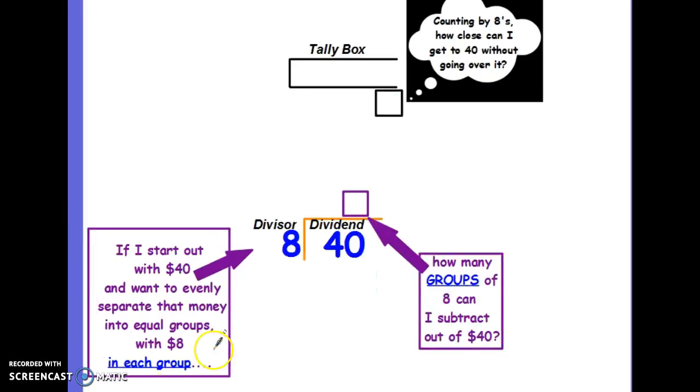Let's take a look at a couple more examples. Here's my tally box. And now I have a dividend, 40, divided by 8. So, counting by 8, how close can I get to 40 without going over? If I start out with $40 and I want to evenly separate that money into equal groups of 8, how many groups of 8 can I subtract out of those $40? Skip count by 8. 8, 16, 24, 32, 40, 48. Hang on. I don't want to promise $48 if I don't have $48. So let me take that last tally mark away and keep in mind that when I had 5 tally marks, I got to the number 40. I write that 40 in the box. I write it underneath the dividend and I count my tallies, 1, 2, 3, 4, and 5 and place that as my quotient because there were 5 groups of $8 in each group that got me to 40. How do I see if there's any left over? I subtract. 40 minus 40 is 0. There's nothing left over.